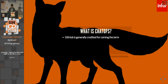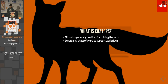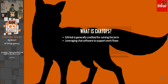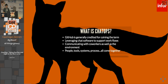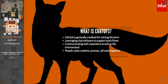What is ChatOps? It's generally credited to GitHub for originally coining the term several years ago. What it is is leveraging chat software to support workflows, to support our processes. Imagine an environment where when you communicate with people in your DevOps organization, in your agile organizations — that's how you get your work done. But what if you were also able to communicate with your environment — your processes, your tools, your systems, your software — all coming together in one huge conglomerate of productivity?